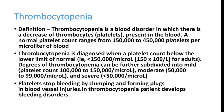Platelets stop bleeding by clumping and forming plugs at blood vessel injuries. If a patient develops thrombocytopenia, they can develop purpuric rashes all over the body in early phases, then bleeding from gums, mouth, and nose, and ultimately bleeding from everywhere including vital areas like the brain and kidneys. Chronic ITP (idiopathic thrombocytopenic purpura) can suddenly aggravate, causing bleeding. Less than 100,000 is clinically important thrombocytopenia.